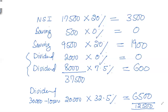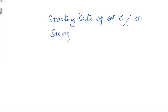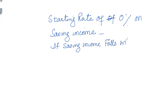There is another situation where we can apply a starting rate of 0% on saving income. This is in addition to the saving income nil rate band, and it is only applicable if saving income falls within the first £5,000 of taxable income.